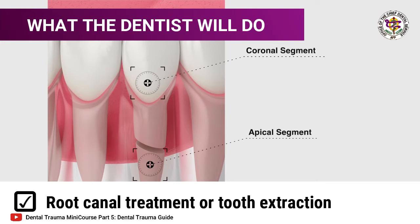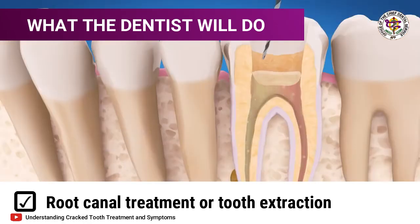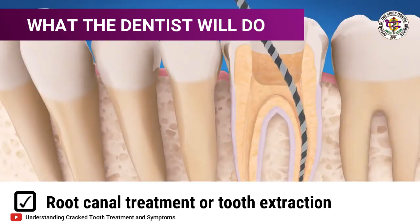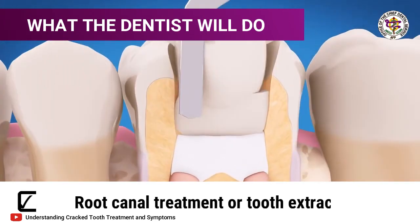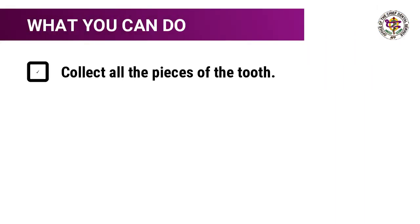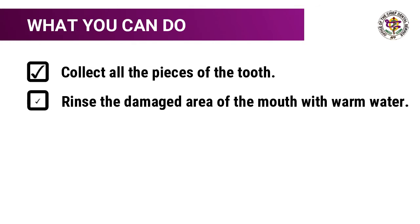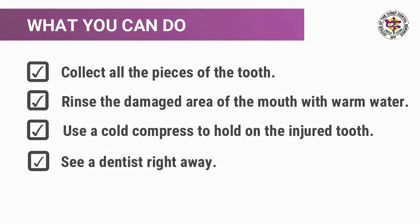What the dentist will do: if the tooth moves when touched, the root is probably broken and the dentist will take out the broken tooth. If the nerve is not covered and root canal treatment is not done, the tooth must be extracted. What you can do: collect all the pieces of the tooth, rinse the damaged area with warm water, use a cold compress on the injured tooth, and see a dentist right away.